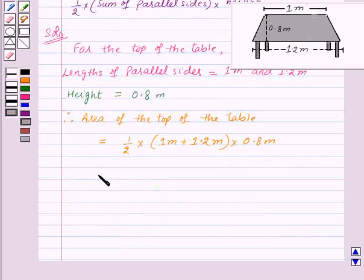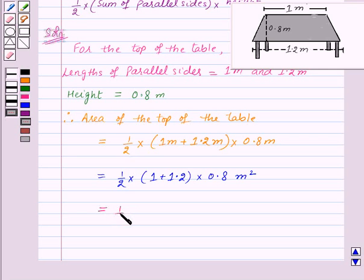So this is equal to 1 by 2 into 1 plus 1.2 into 0.8 meter square. That is 1 by 2 into 2.2 into 0.8 meter square. Which on simplifying gives 0.88 meter square.